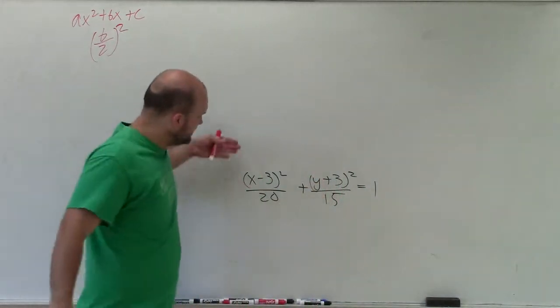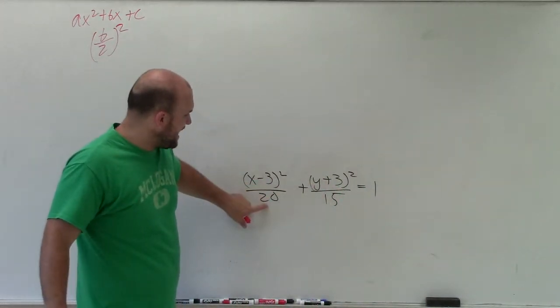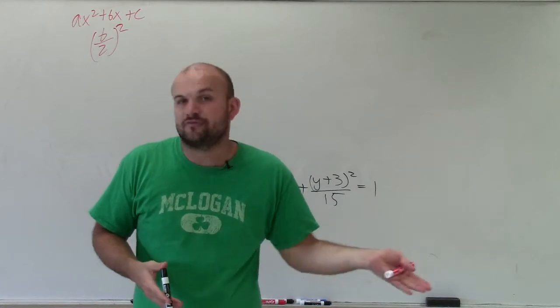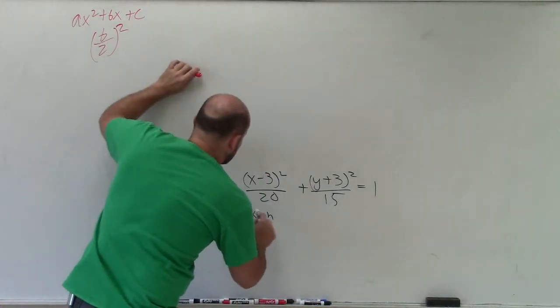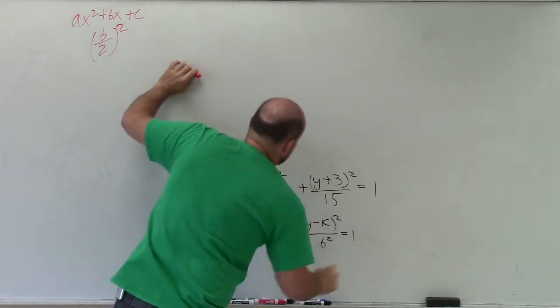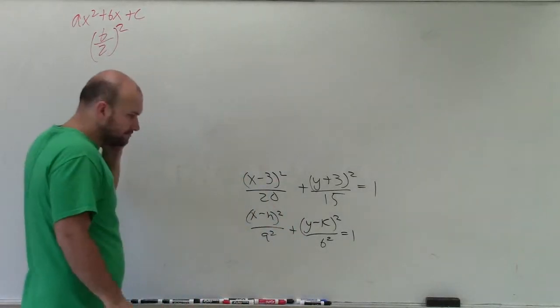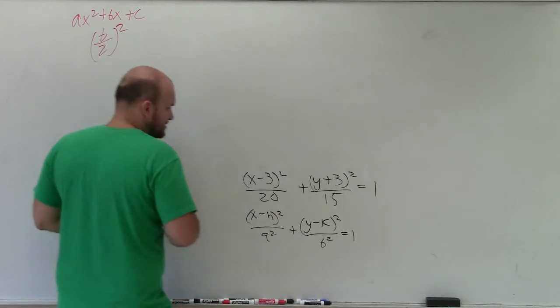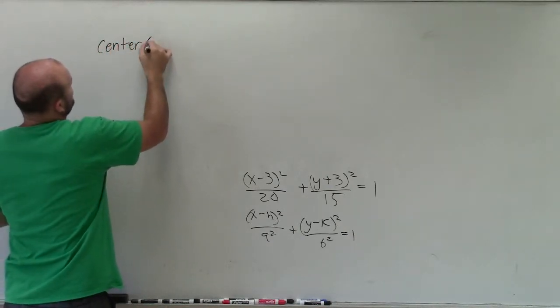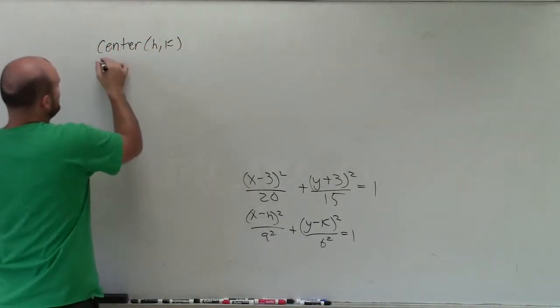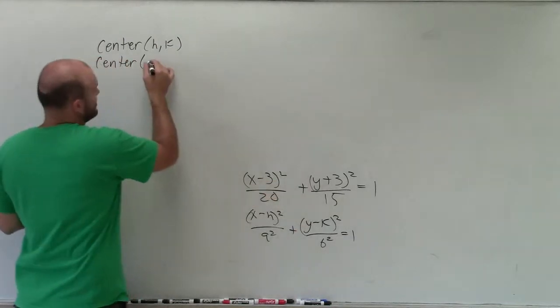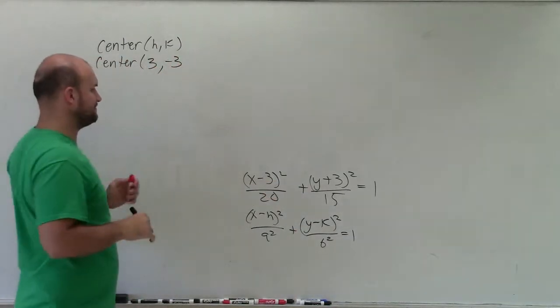So now we know, we look at this and we say, all right, the larger of my two numbers is under my x. Therefore, I know the major axis is horizontal. Therefore, from the center, I'm going to go horizontally to define the foci and the vertices. So the general equation is x minus h squared over a squared plus y minus k squared over b squared equals 1. Perfect. So now to graph this, let's just kind of start writing down what we need to know and then how to graph. So the first thing I always like to know is where's the center? Well, the center is h comma k. So in this case, we can say the center is at, remember, it's always opposite of h, opposite of k. So it's going to be 3 comma negative 3.